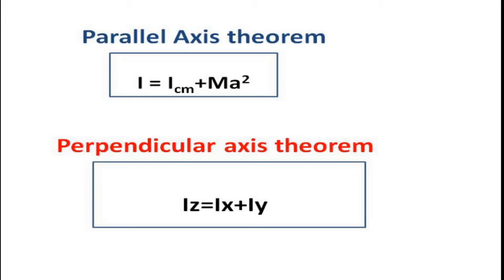What is the parallel axis theorem? It states that the moment of inertia of a rigid body about any axis is equal to the sum of its moment of inertia about a parallel axis passing through the center of mass of the body, and the product of the mass of the body and the square of the distance between the two axes.